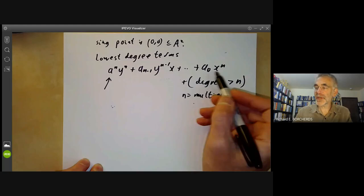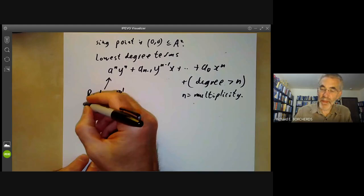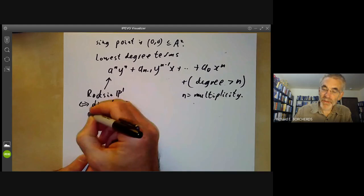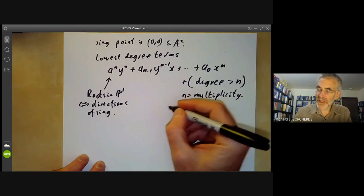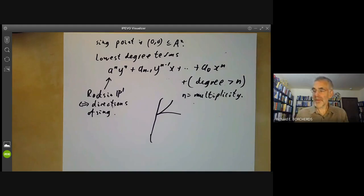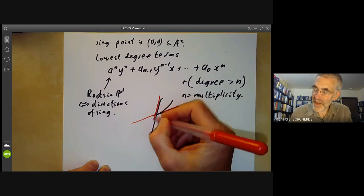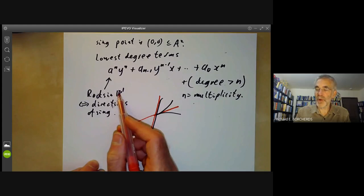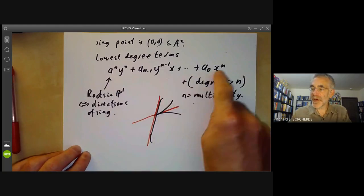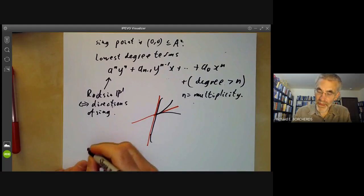The lowest degree terms form a homogeneous polynomial, which has roots in one-dimensional projective space. These roots correspond to the directions of the singularity. For example, a singularity might have one branch going in one direction and another branch going in another direction. The lines through the singularity give a copy of P^1, so the roots of the homogeneous piece tell you what direction the various branches go off in and what their multiplicities are.